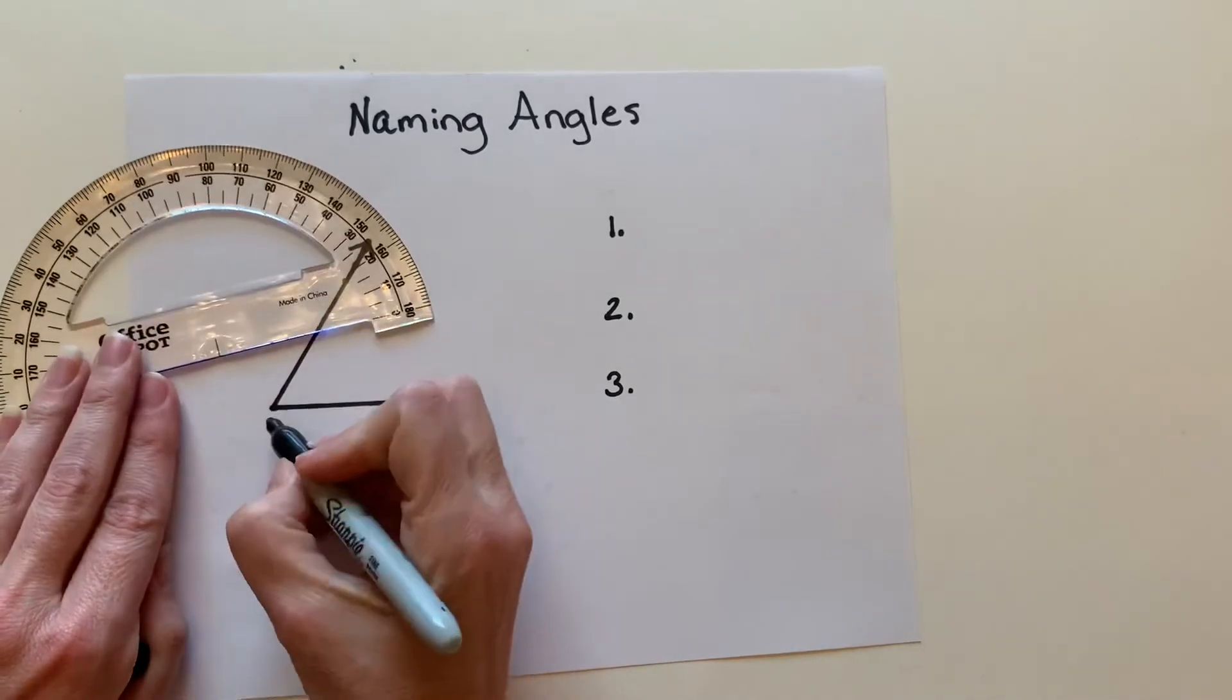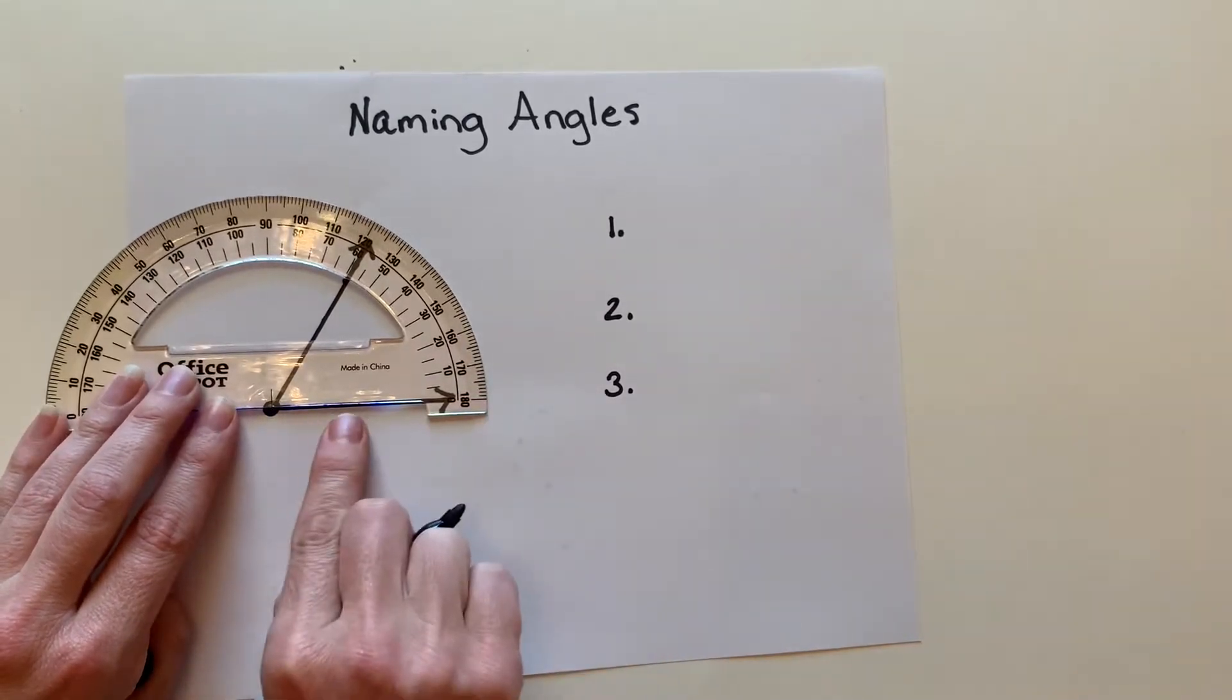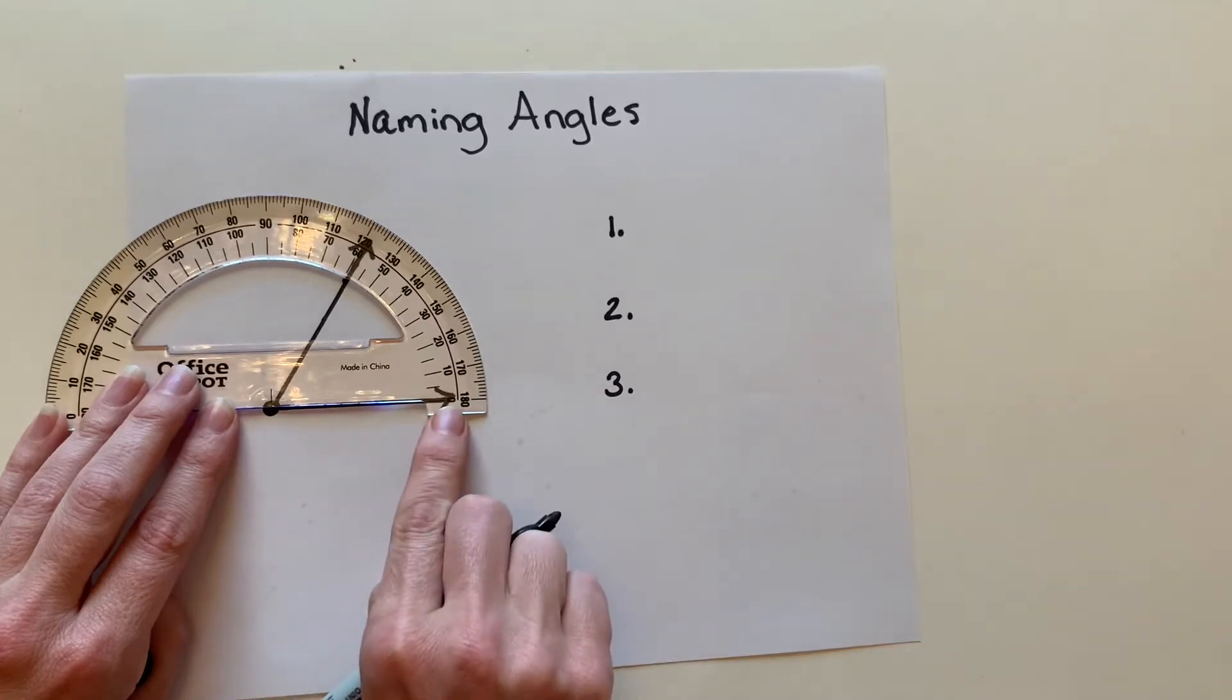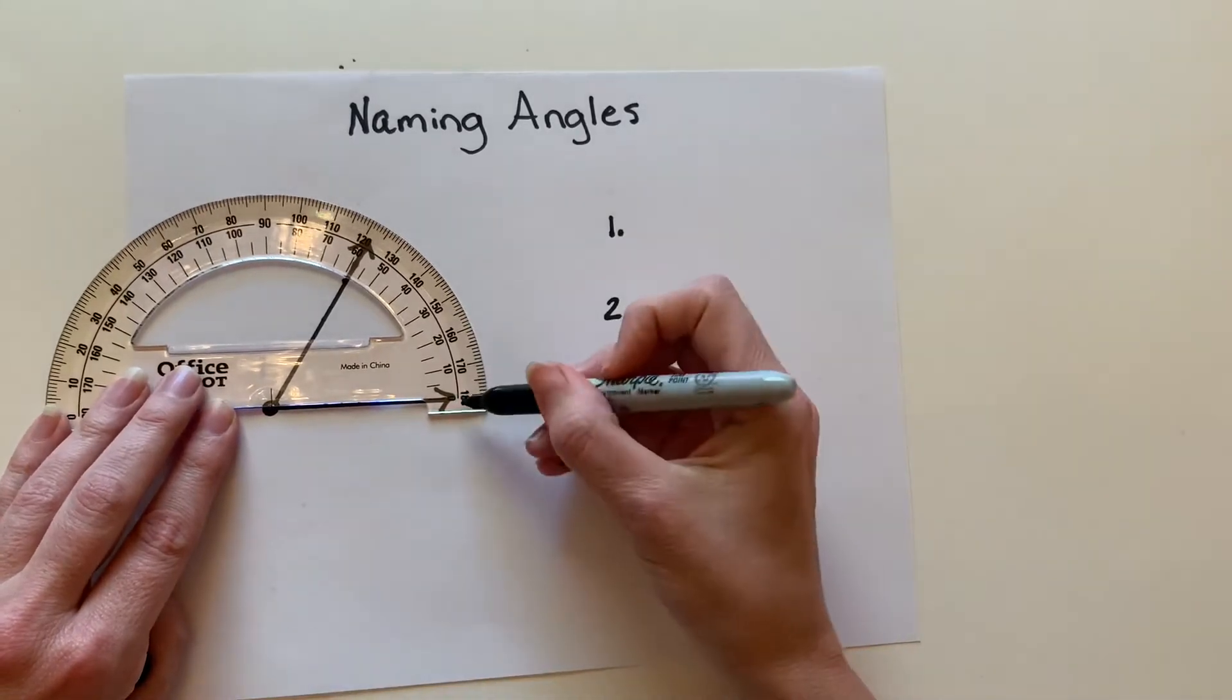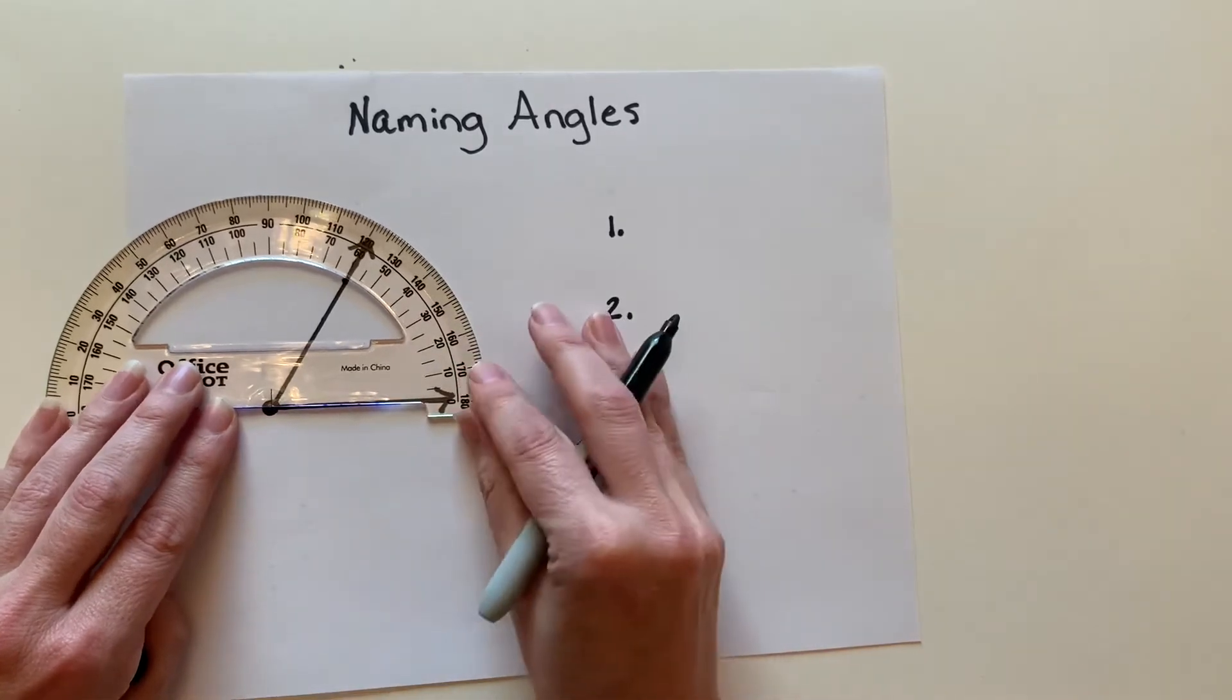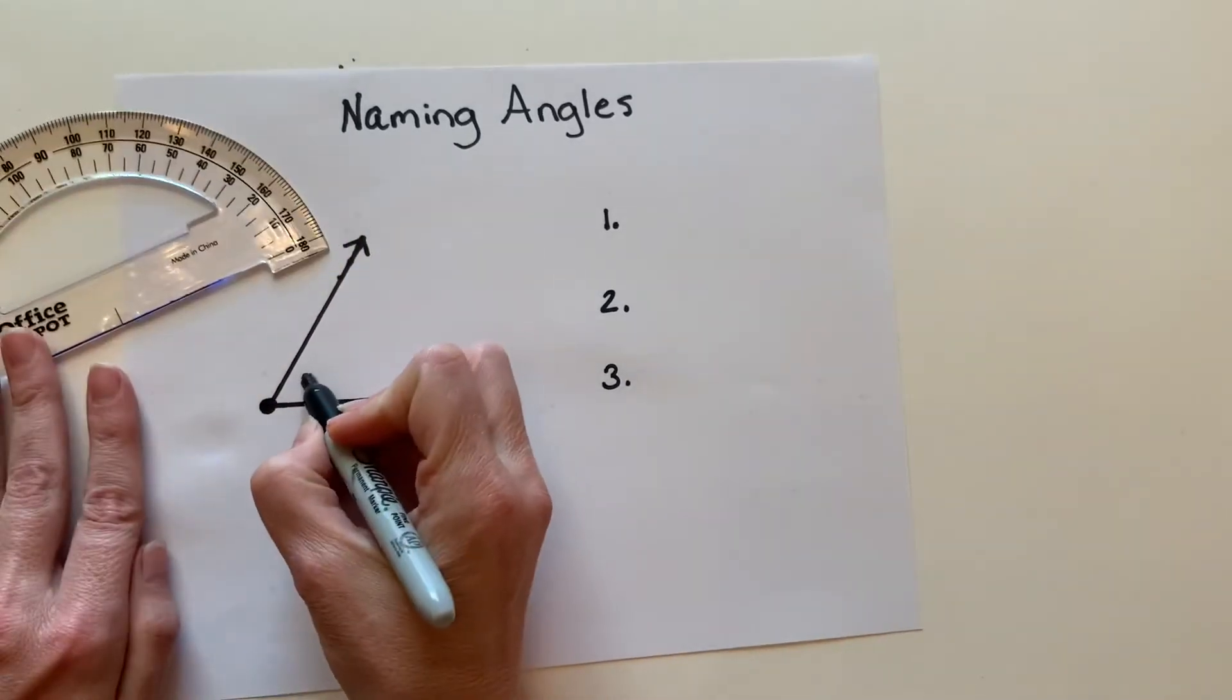You see how this line is going this way? This is our ray. Actually, this ray here, the arrow is pointing this way, so it's pointing towards this zero on our protractor. Line that up, we follow this line up, and this looks like, get this lined up perfectly, about a 59 degree angle.